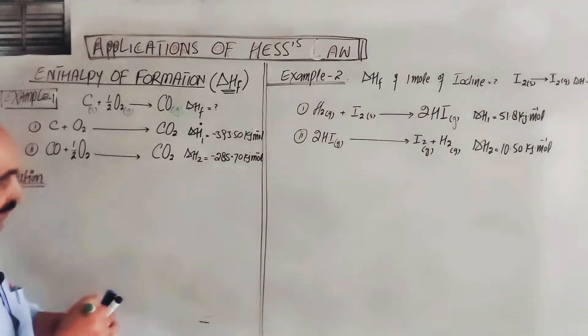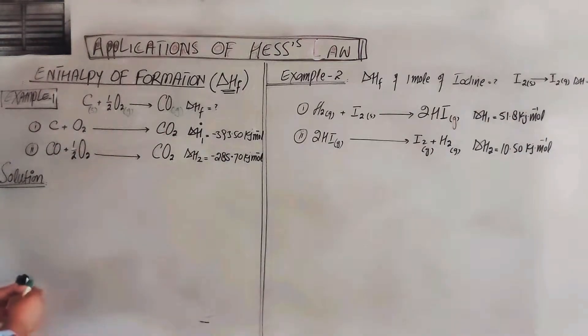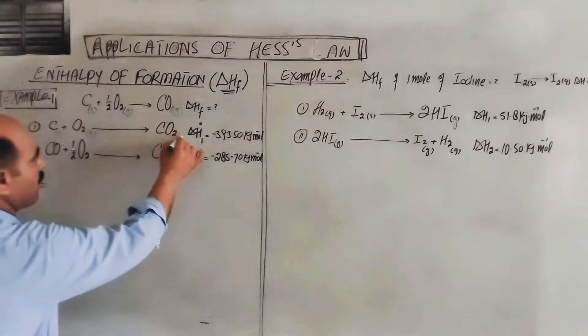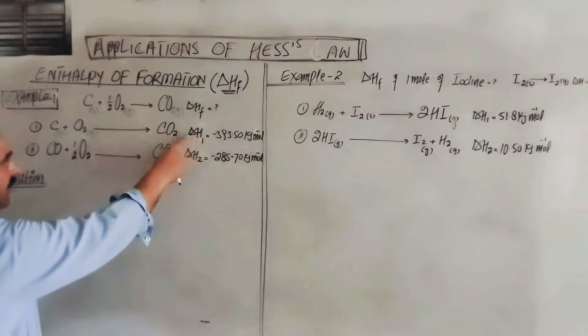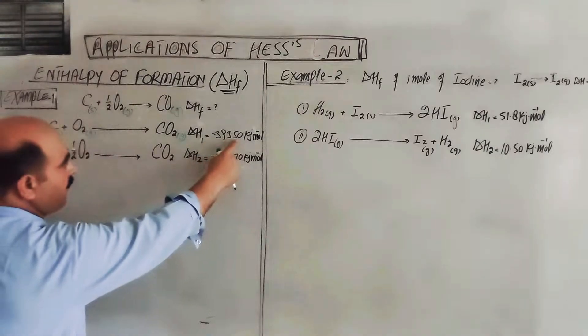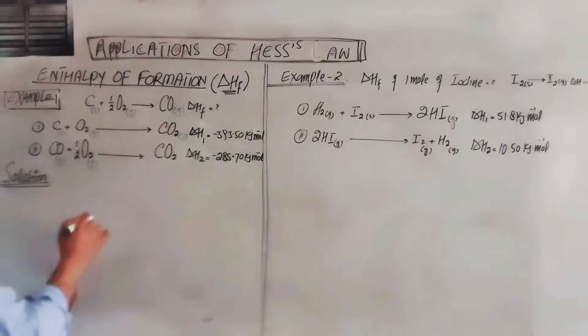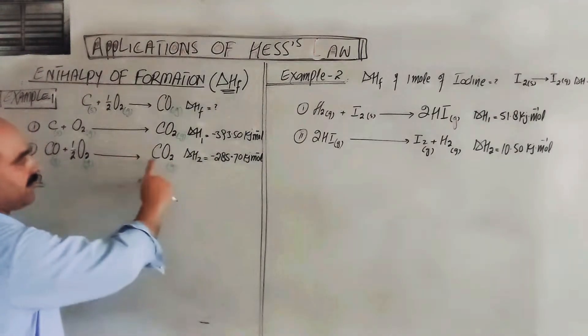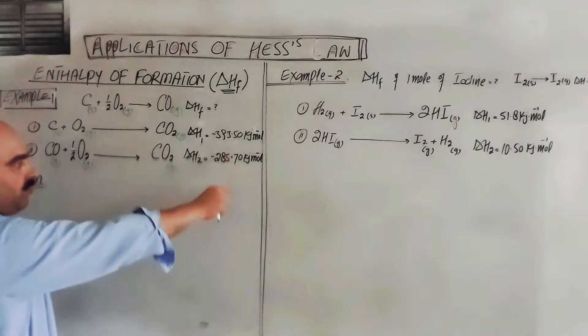With the help of these two given equations: First, one mole solid carbon combines with one mole oxygen in gaseous state to form one mole carbon dioxide. The enthalpy of formation or delta H1, enthalpy change during step one, is minus 393.50 kilojoules per mole. Next, one mole carbon monoxide combines with half mole oxygen to form one mole CO2. Second step delta H2 is minus 285.70 kilojoules per mole.